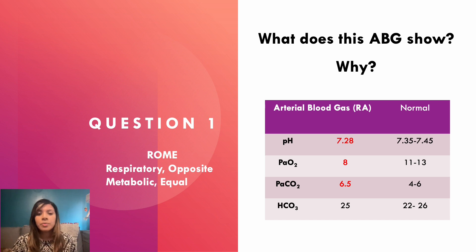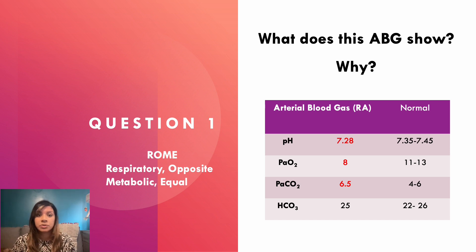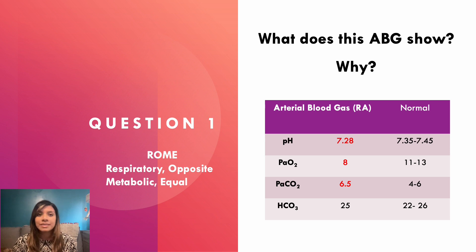We have a couple more ABG examples to work through. For the first additional example: the patient's oxygen has dropped to 8, so they're hypoxic. The pH is low — the patient is acidotic. The pCO2 has moved in the opposite direction and increased, so we can confidently say this is a respiratory acidosis with hypoxia — that's a type 2 respiratory failure. Because the bicarbonate is completely normal, there's been no metabolic compensation, so we know this is acute.